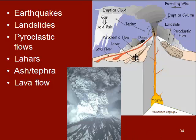Lahars are produced when water or ice mixes with hot volcanic material. It melts the ice, and then all this stuff flows in a big slurry downslope through any valleys that exist. And then there are your typical lava flows as well.